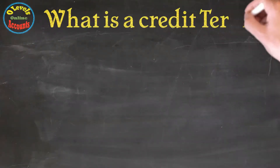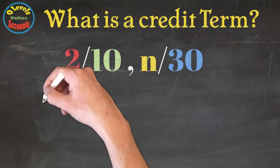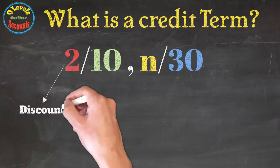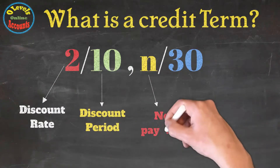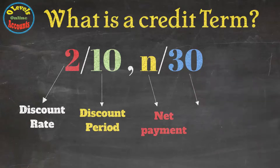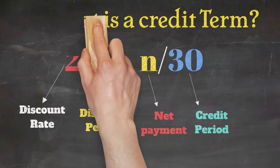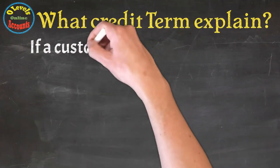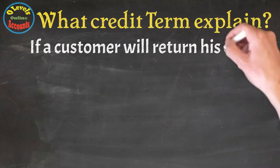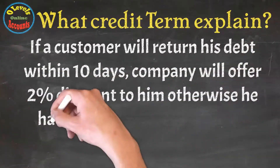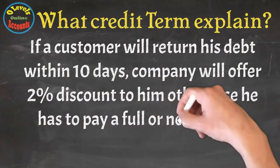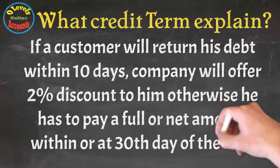What is the credit term 2/10 N/30? Here 2 denotes the discount rate, 10 stands for the discount period, N denotes net payment, and 30 defines the credit period. This term means that if a customer pays within 10 days, the selling company will offer a 2% discount; otherwise, he has to pay the net or full payment within or at the 30th day.